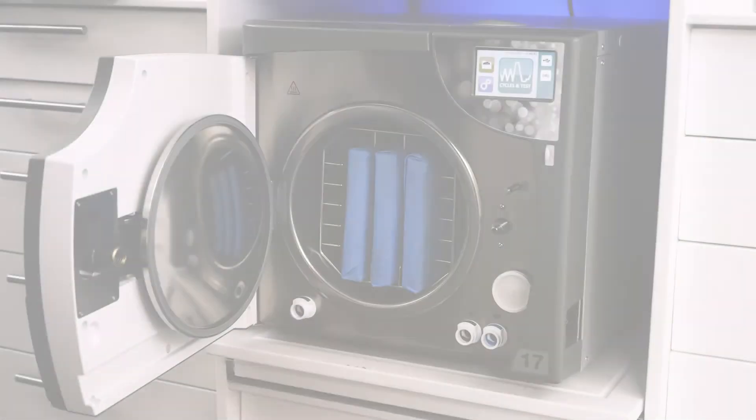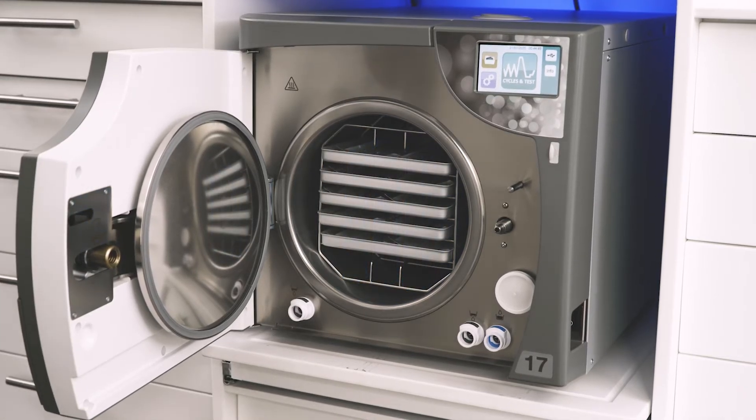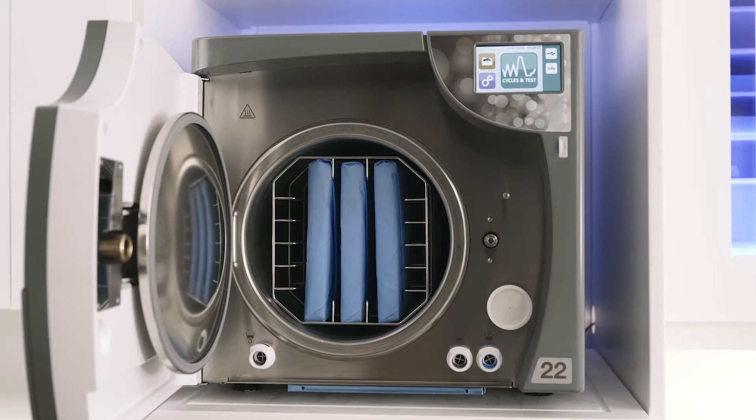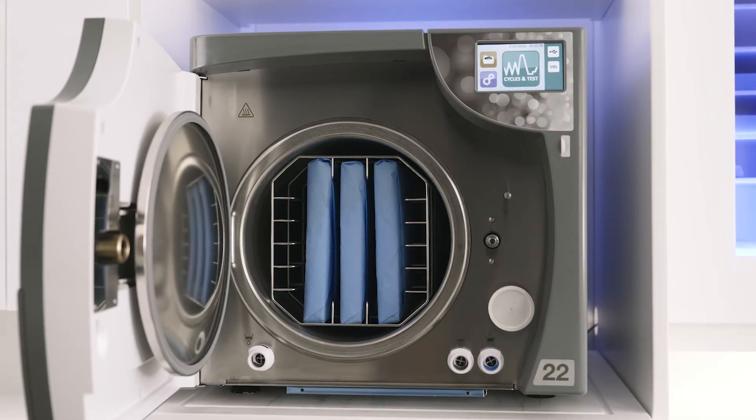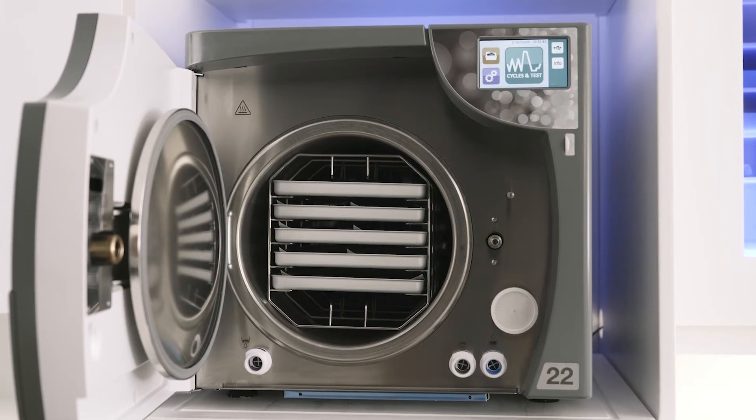The 17-liter can sterilize three full-size cassettes or up to 20 pouches on the five included trays. And the 22-liter, which has a deeper chamber, can sterilize three oral surgery cassettes or up to 25 pouches on the five included trays.